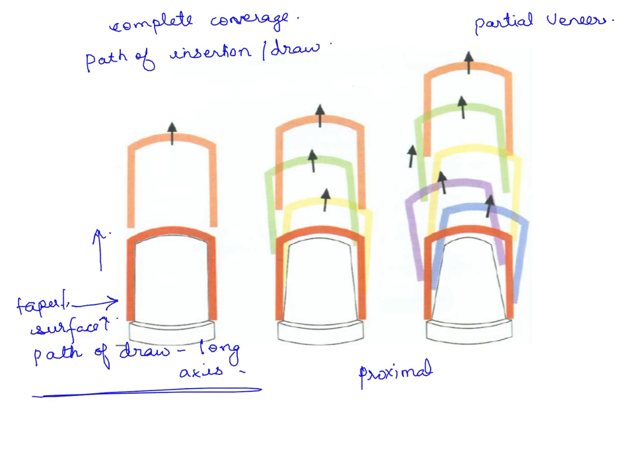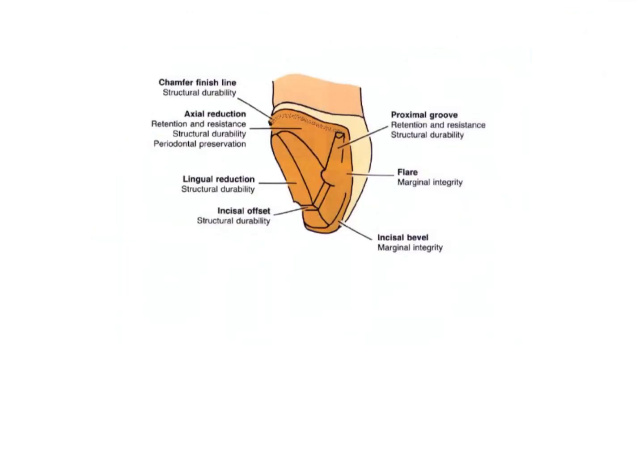As the taper increases, the path of draw becomes easier and the retention form reduces. Because we are talking about partial veneer crown, the retention is already lesser since we are utilizing only a limited part of the crown. For example, consider this—here this is a three-quarter crown.